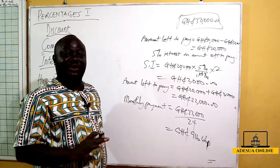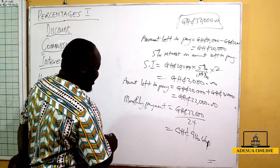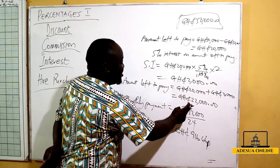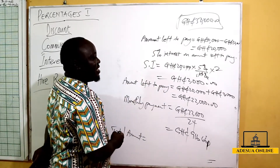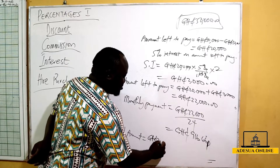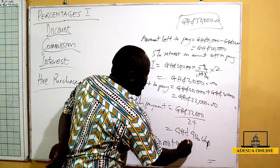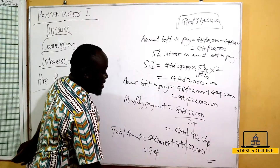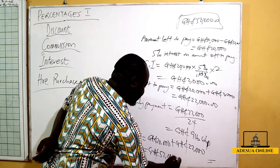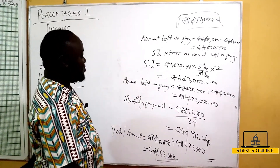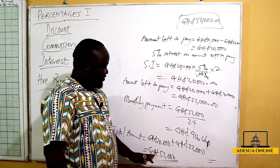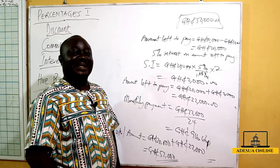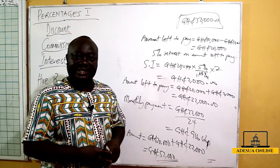Now if I want to find the total amount I've paid for the whole car, the total amount equals 22,000 Ghana cedis (the amount left to pay including interest) plus the 30,000 I paid earlier as a down payment. So 30,000 plus 22,000 gives us 52,000 Ghana cedis. This is the total amount I've paid for the car. So Mr. Brown has made a profit of 2,000 Ghana cedis in addition to his asking price.